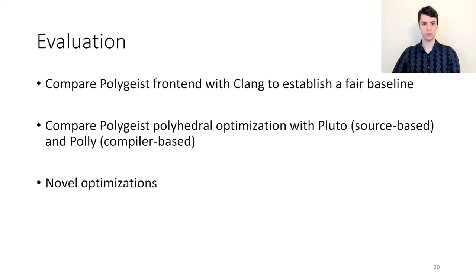To analyze the effectiveness of Polygeist, we ran three different tests. First, we compared Polygeist without polyhedral optimizations to vanilla Clang to validate that we had a fair baseline to compare against. Second, we compared Polygeist with polyhedral optimizations of two state-of-the-art polyhedral compilers: Pluto, a source-based tool, and Polly, a compiler-based tool. Finally, we performed an in-depth analysis of the optimizations enabled by Polygeist's ability to work at both a low and high level.